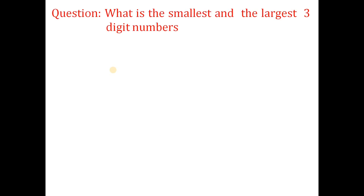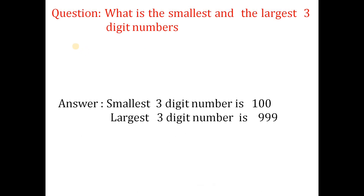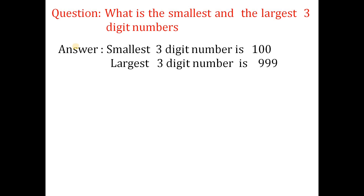Next question: what is the smallest and the largest three-digit number? The smallest three-digit number is 100 and the largest three-digit number is 999.